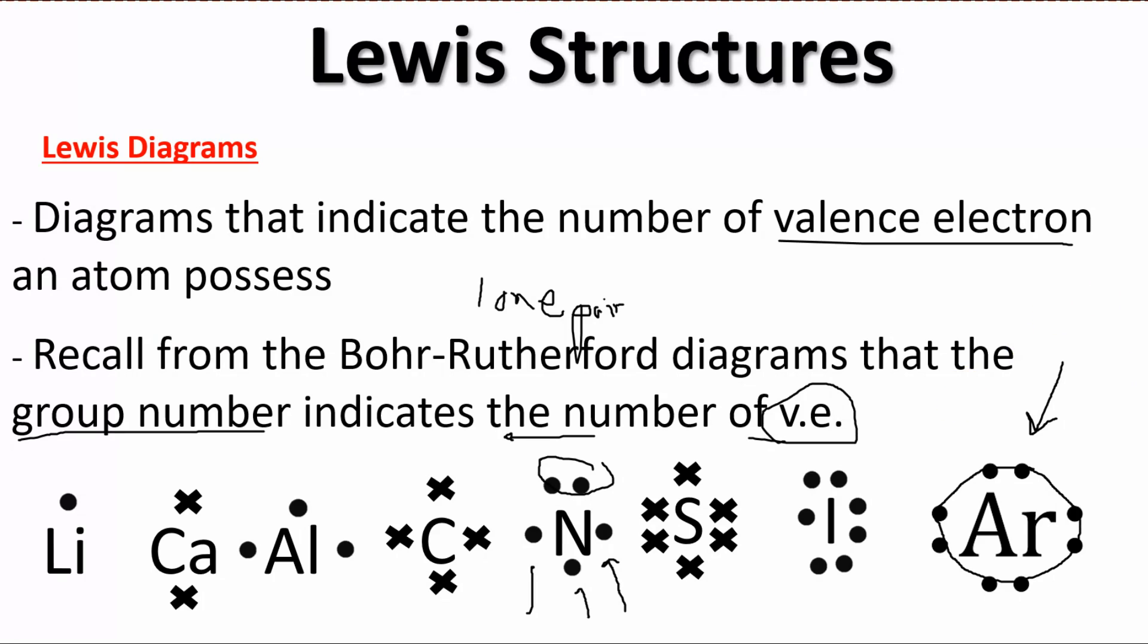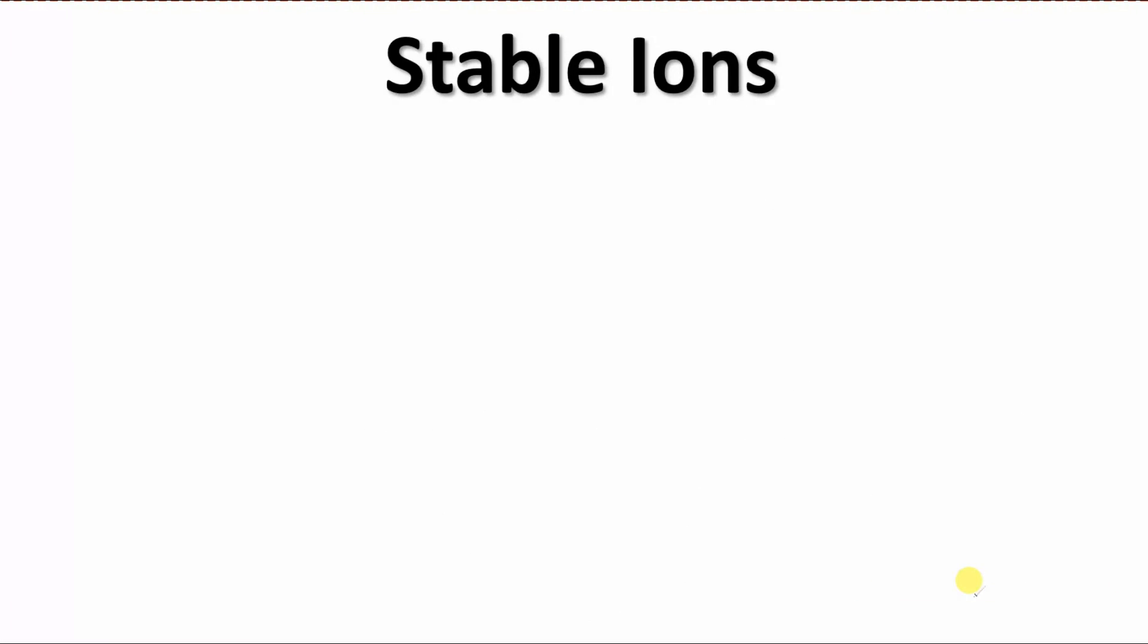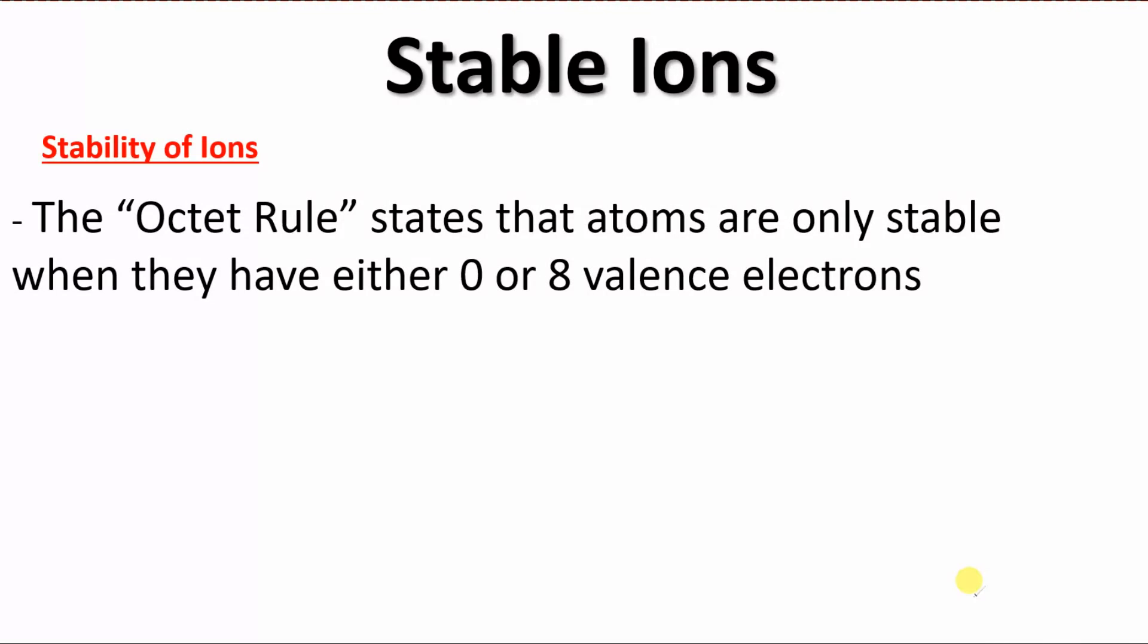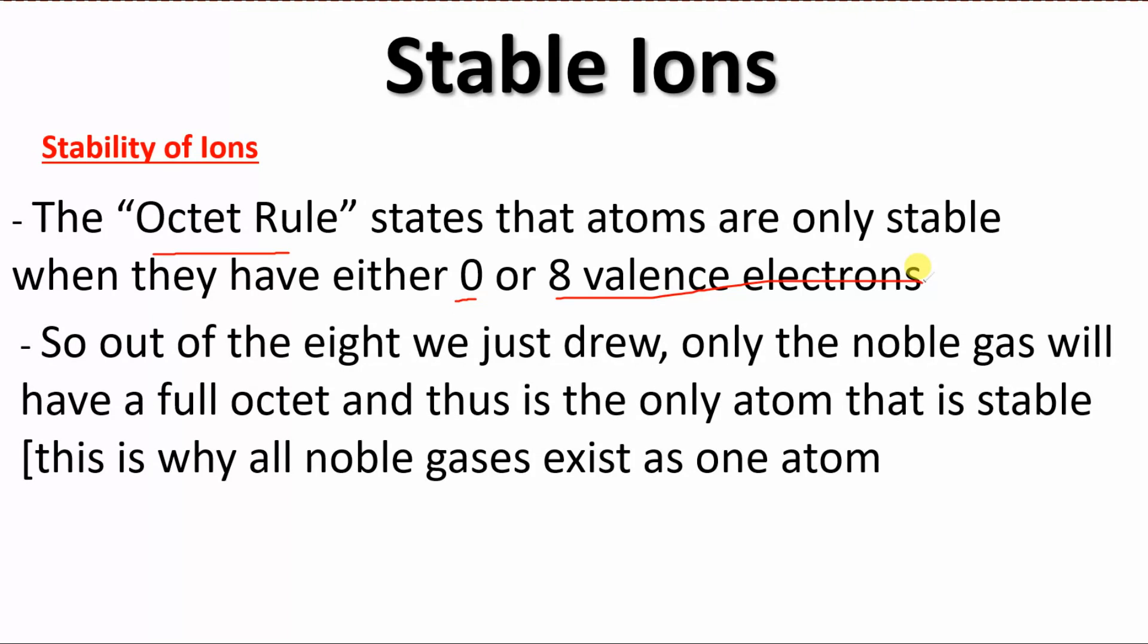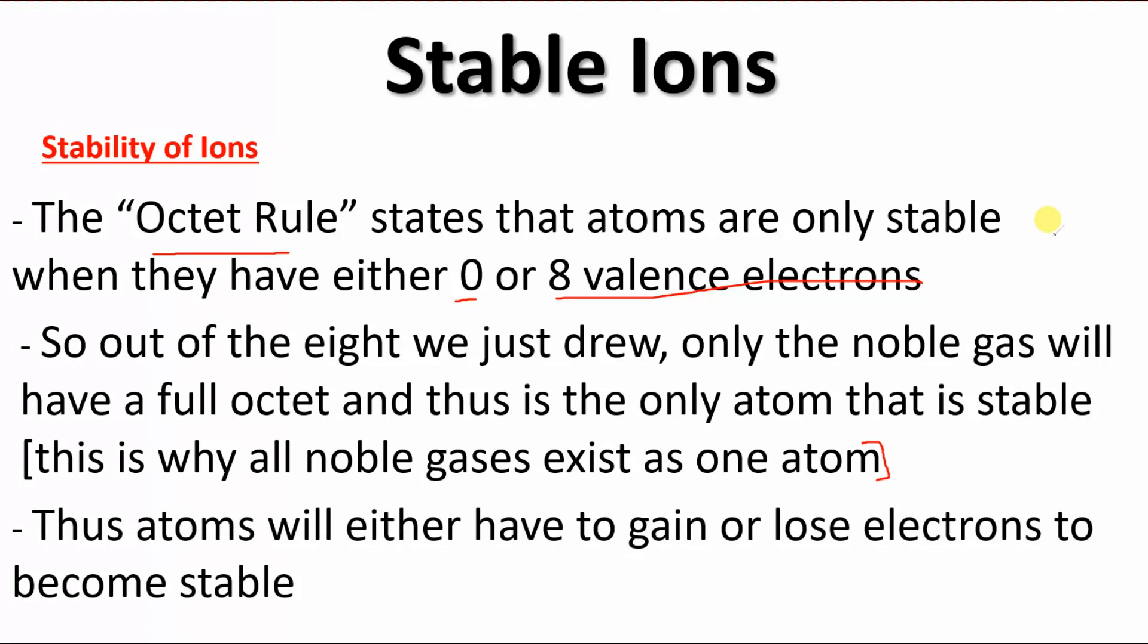So we're going to have to do some work with the other atoms here that we've looked at. So what's going to guide us is something called the octet rule. So when we're looking at stability of ions, the octet rule states that atoms are only stable when they have zero valence electrons or eight valence electrons. And as we just discussed, out of the ones we just drew only that very last one, the argon, was the only one that was actually happy and stable, and so the rest of them are going to have to do something to become stable. And what that thing is is they're either going to have to gain electrons from somewhere or lose electrons to become stable.